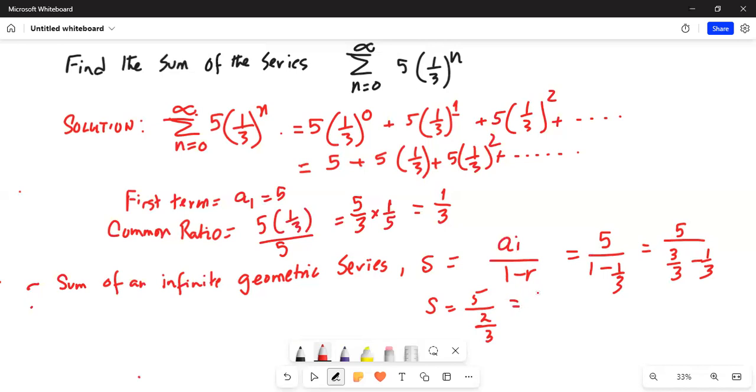Now, when you bring the term 2 by 3 from the denominator to the numerator, it flips over. So, you have 5 multiplied by 3 over 2. And hence, the sum is equal to 15 over 2.